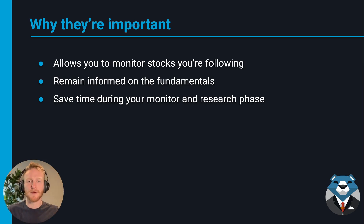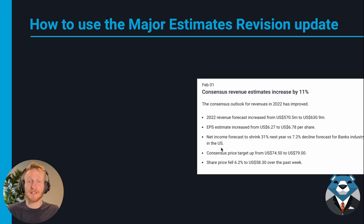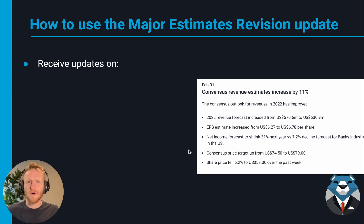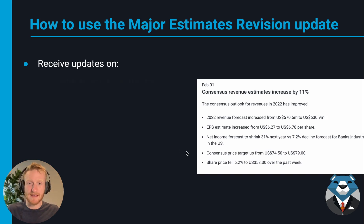These particular updates basically compile all the data and send it through in a very brief update, which is very useful and saves a lot of time. Today we're looking at the major estimates revision update — this is basically when analysts change their estimates of the future. There are four kinds of outcomes: either an upgrade or a downgrade in their revenue estimates, or an upgrade or a downgrade in their EPS estimates.